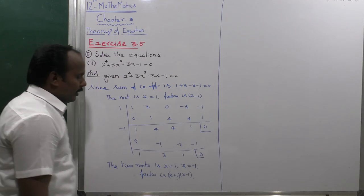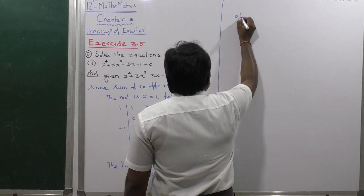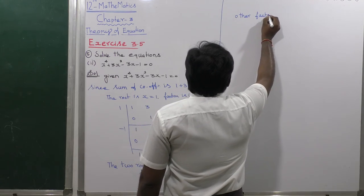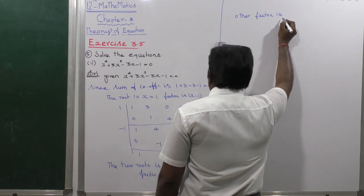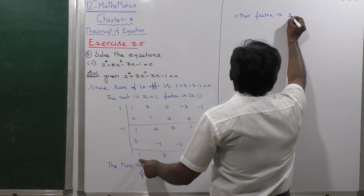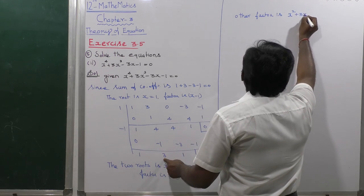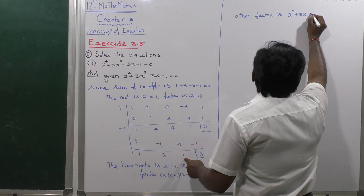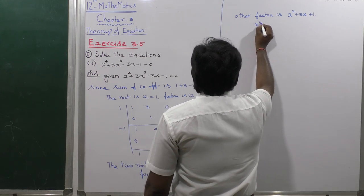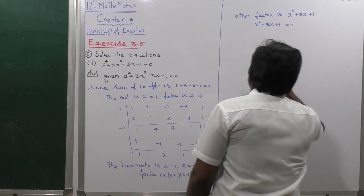The two factors are (x + 1)(x - 1). The remaining other factor is x² + 3x + 1 = 0, which is the quadratic equation.